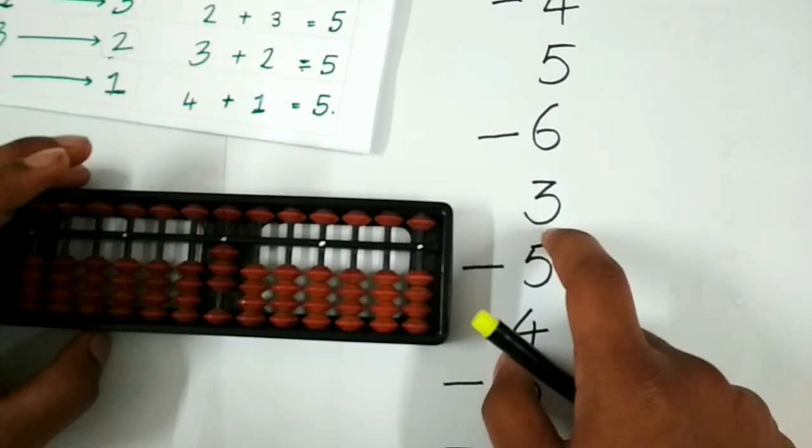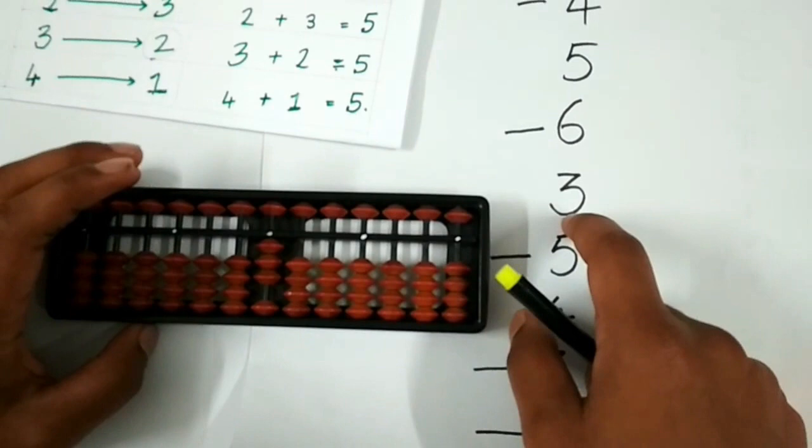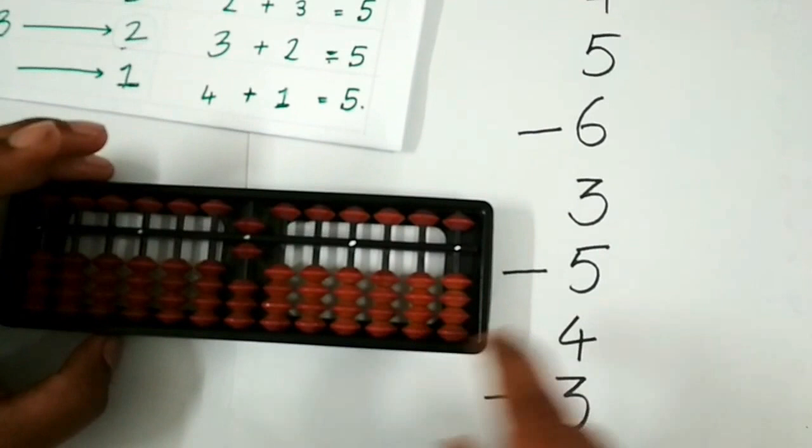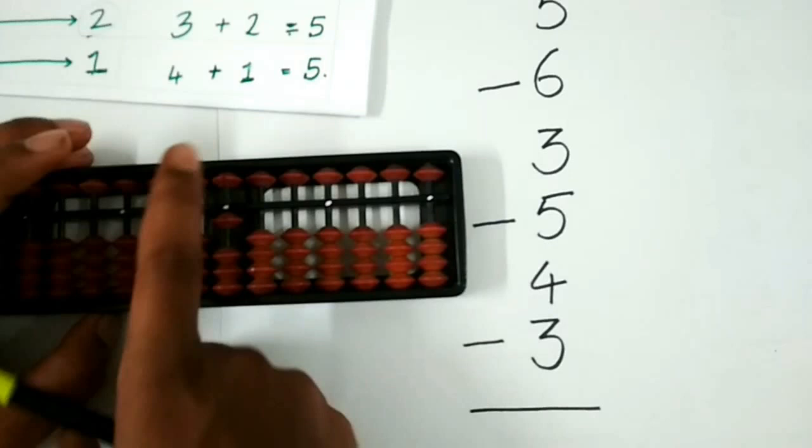To add 3, let us check do we have enough bits or not. We have only 1 bit at the lower end. To add 3, let us check who the friend of 3 is. Friend of 3 is 2. So add 5 and remove the friend 2. To subtract 5, let us see do we have enough bits or not. We have enough bits so remove 5.